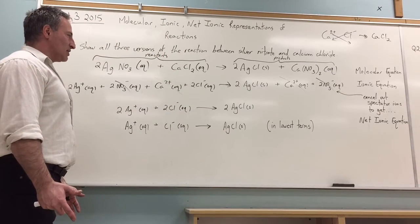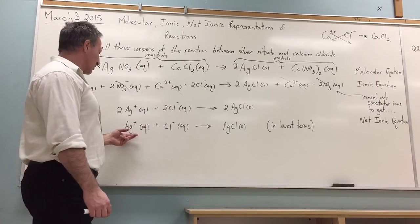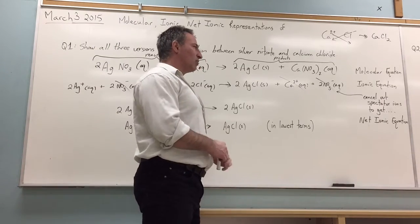That's really what the reaction is, and because there's a two in front of everything, we can cancel all the twos and write it in lowest terms. Silver cations and chloride anions combine to form silver chloride as the precipitate.